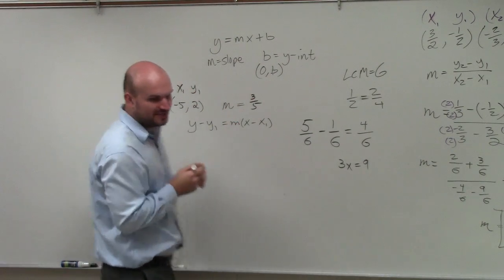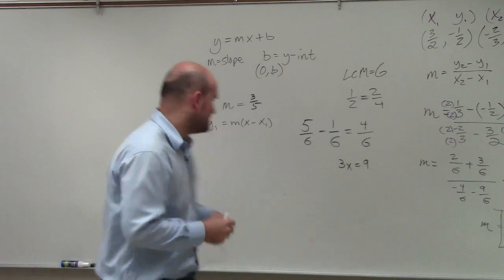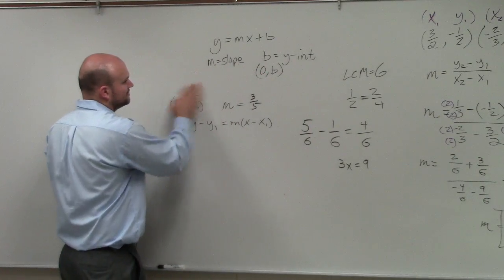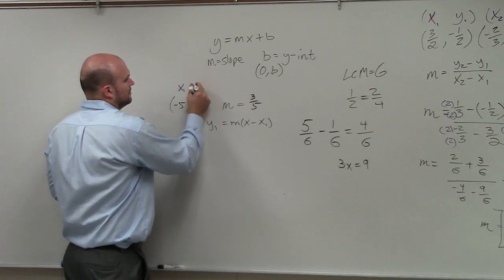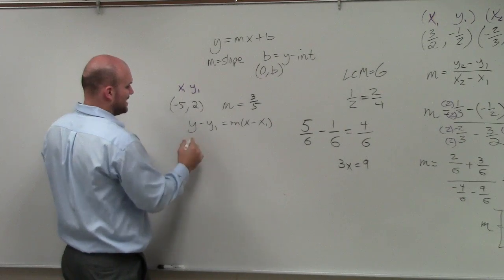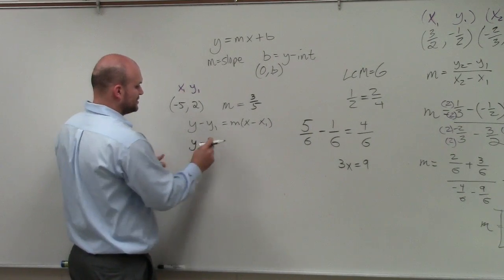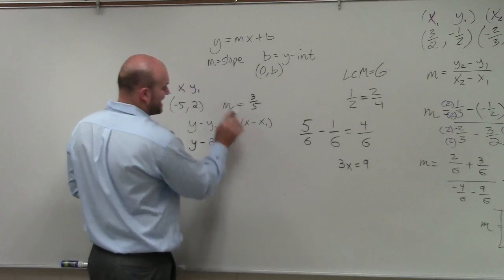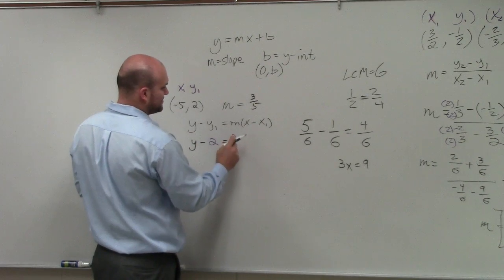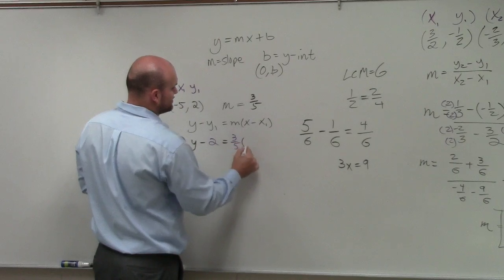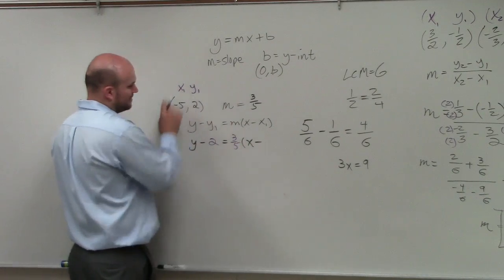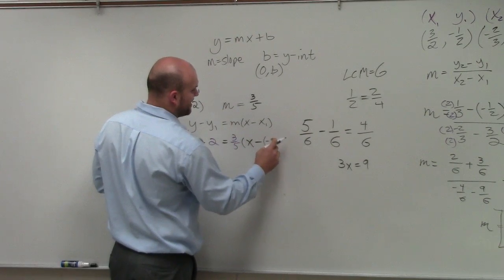Now, all I simply need to do is plug those numbers into my formula. So I'll write this as y minus y1, which is 2, equals m, which is 3 fifths, times x minus x1, which is negative 5.